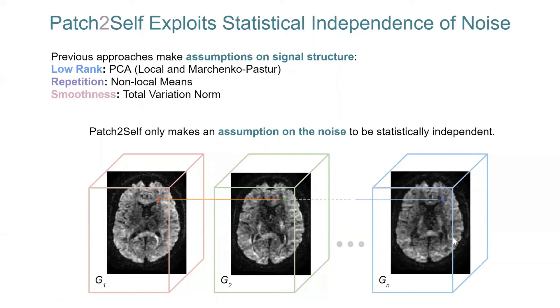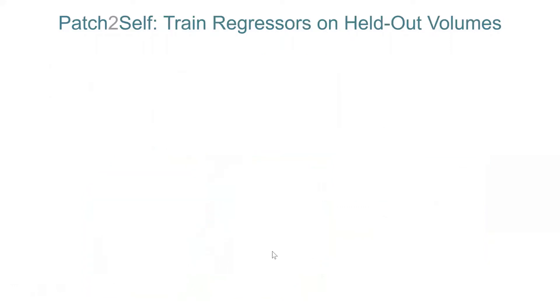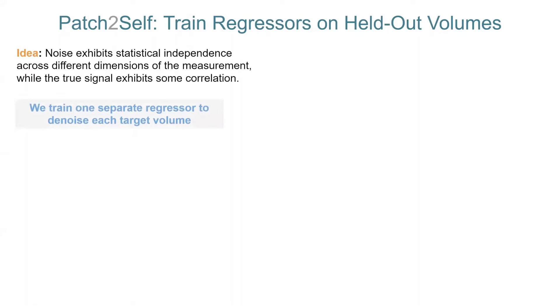So I'm showing three gradient directions over here. These are all independently acquired, and we can make use of the fact that noise in one gradient direction is independent of the noise in other gradient directions. So how noise is randomly fluctuating in G1 would be independent of how noise is randomly fluctuating in G2, and so on. So using this fact, we will train a self-supervised regression model. The idea is that, since we know that noise is statistically independent across gradient directions, we can train a separate denoiser to denoise each volume. And the idea is that, since noise is uncorrelated or randomly fluctuating, the regression model will not be able to learn that. It will end up learning only the true signal. So the key takeaway is that we train one separate regressor to denoise each volume.